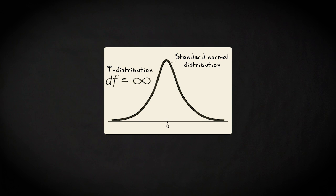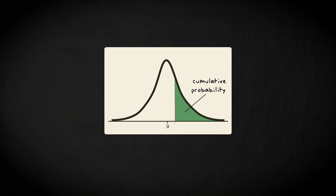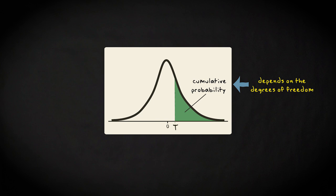Just like with the standard normal distribution and z-scores, we can find cumulative probabilities pertaining to particular t-scores. An important difference with the standard normal distribution, however, is that these probabilities depend on the degrees of freedom. When you're computing a 95% confidence interval, you can find the t-scores pertaining to the 95% confidence level for all the different possible degrees of freedom in a so-called t-table. This table is similar to the z-table.